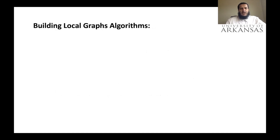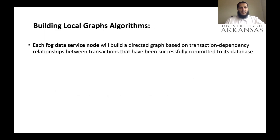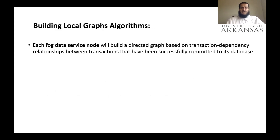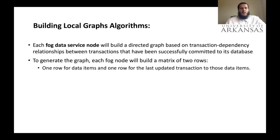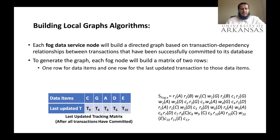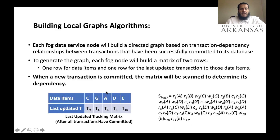Building local graph algorithms: each FAC data service node will build a directed graph based on transaction dependency relationships between transactions that have been successfully committed to its database. To generate the graph, each FAC node will build a matrix of two rows — one row for data items and one row for the last updated transaction to those data items. When a new transaction is committed, the matrix will be scanned to determine its dependency.